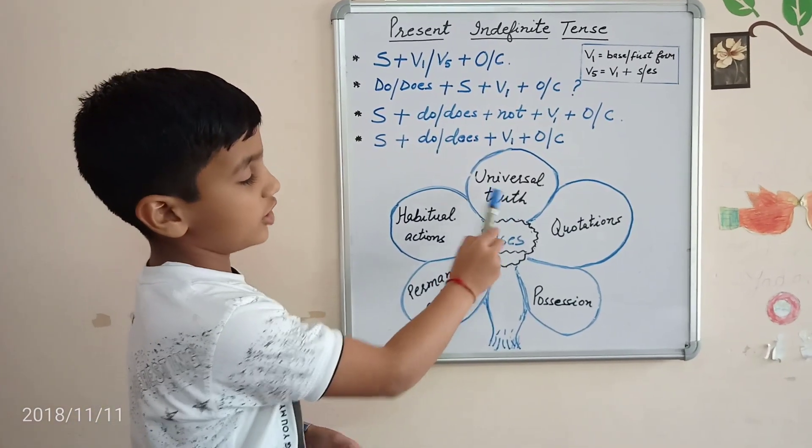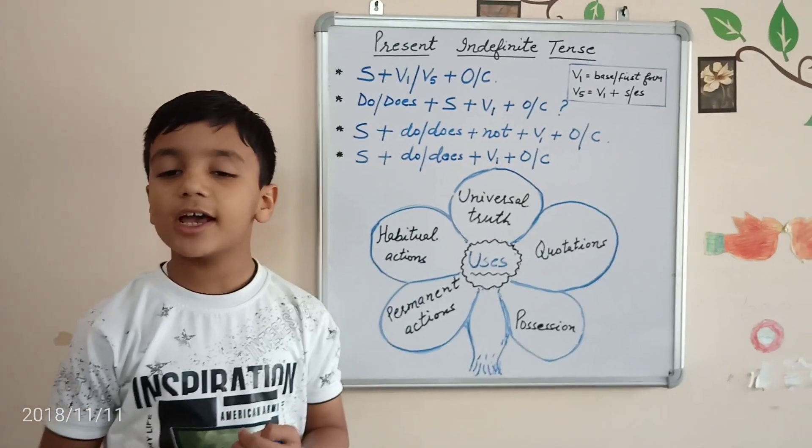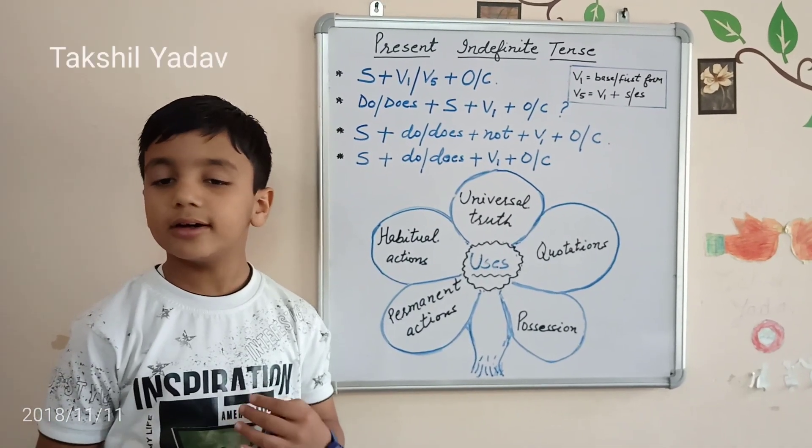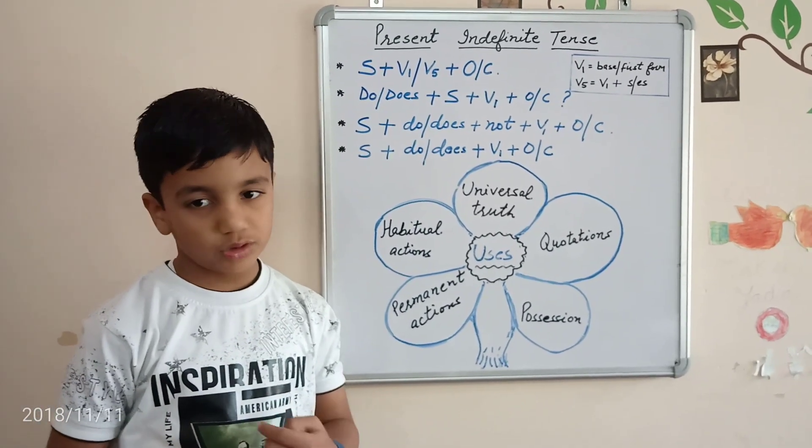Universal or General Truth: The sun rises in the east. The earth revolves around the sun.